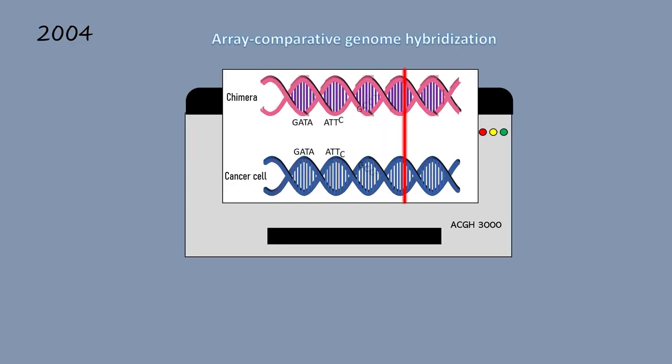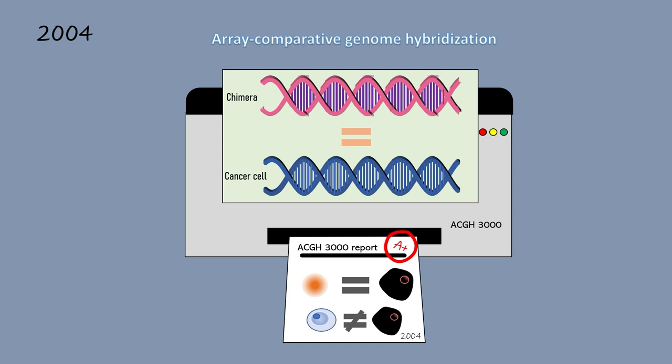Furthermore, when comparing the genomes of the chimera mice with the original cancer cells, they found that their genomic profiles were identical. This confirmed that the embryonic stem cells were in fact the transformed melanoma cells and not other non-transformed cells that had contaminated the experiment, something past studies had failed to do.